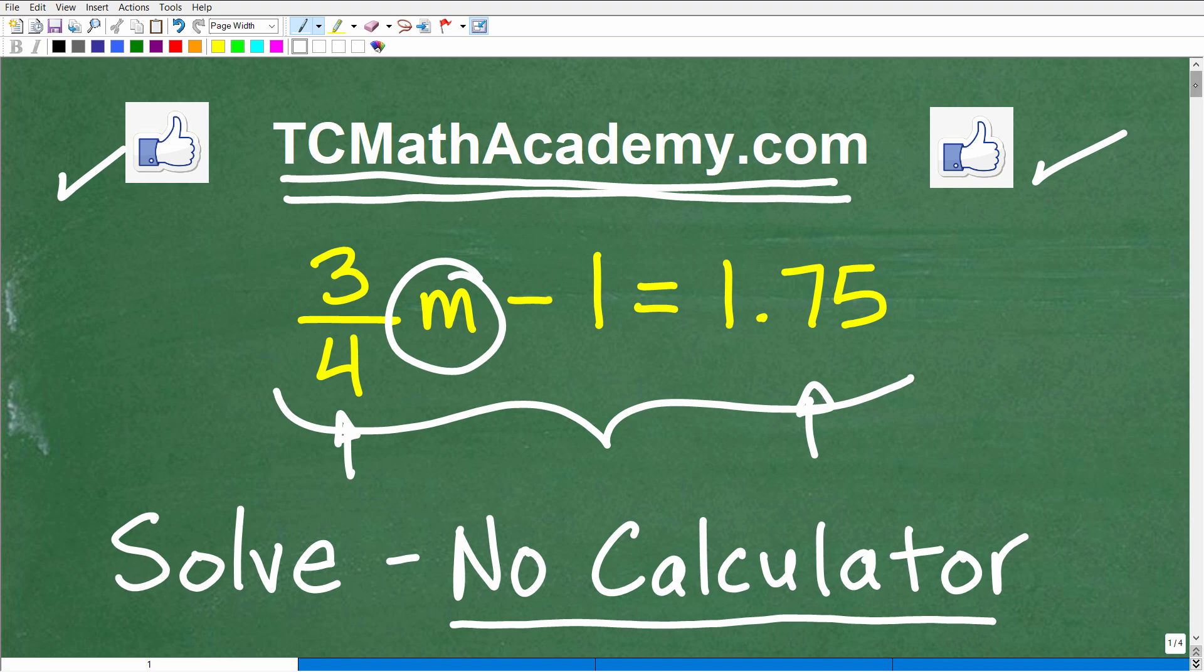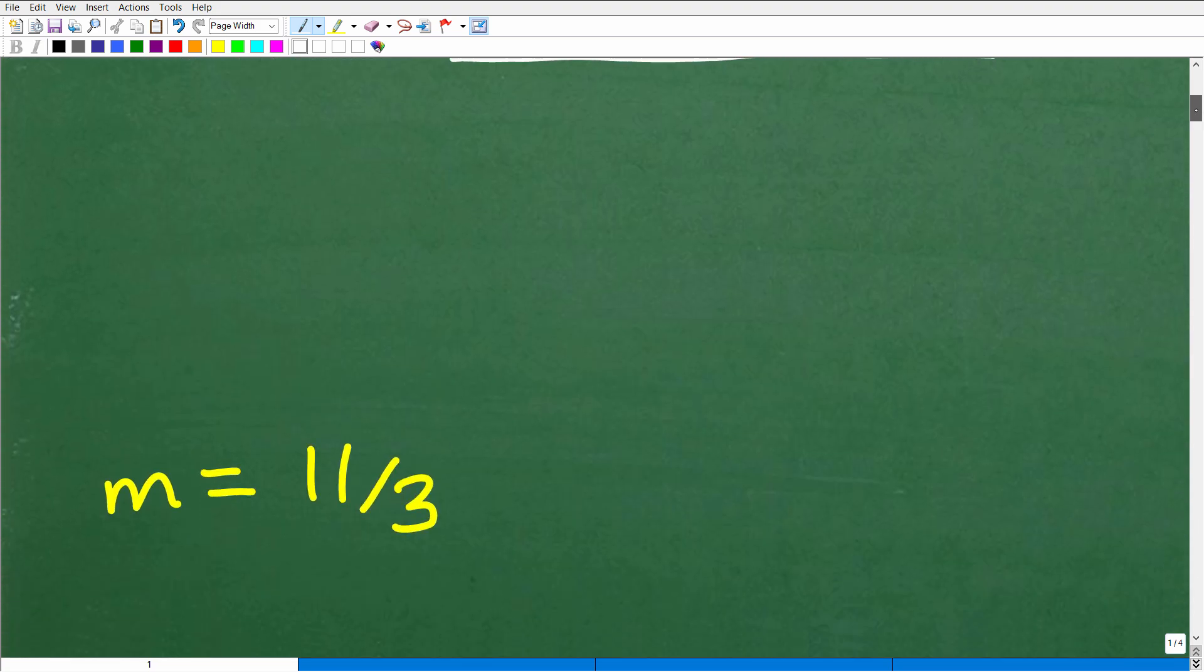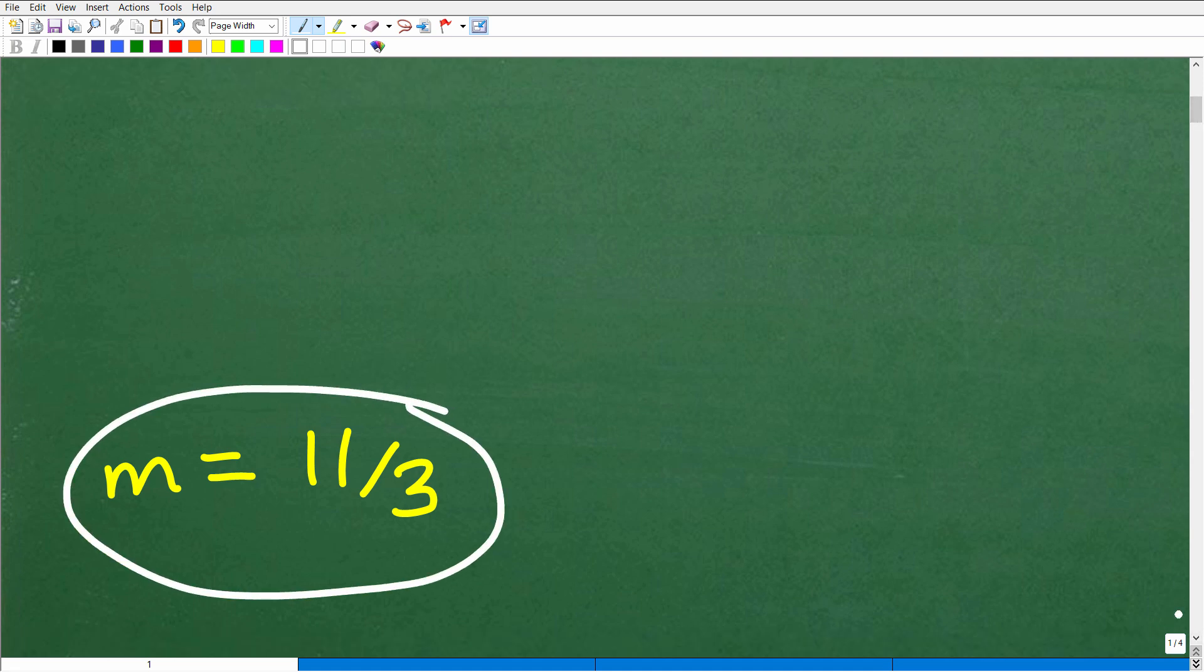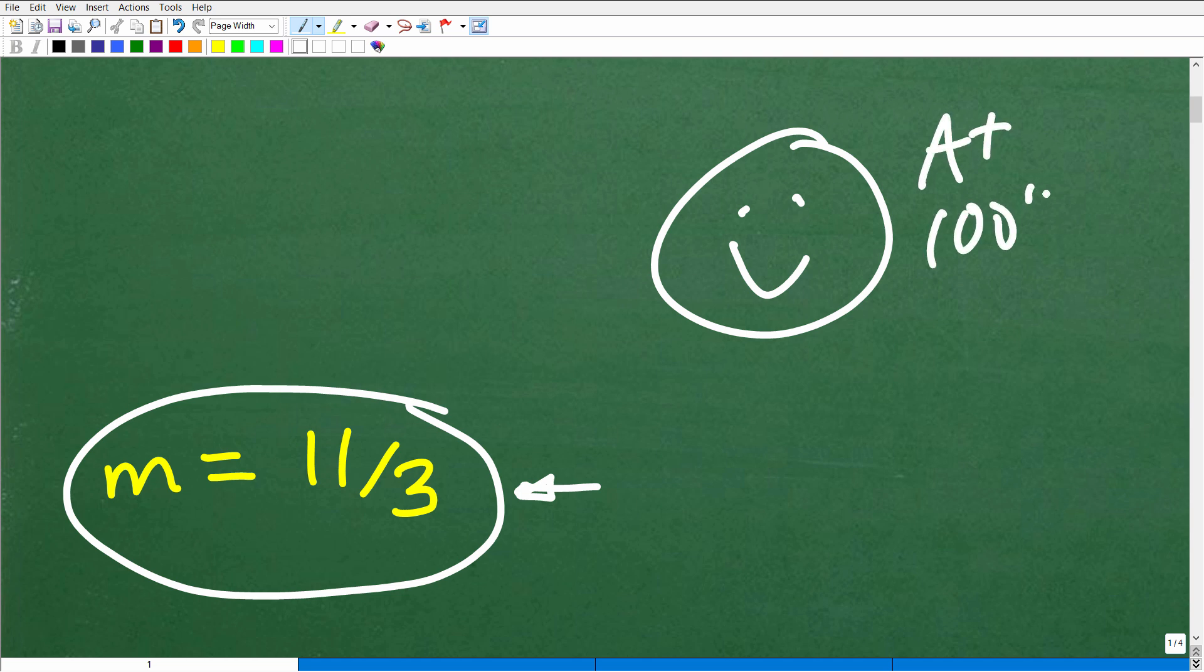What is M equal to? Well, M is equal to the fraction 11 thirds. So if you got something different than this, or if you change this to a mixed number, you'll know whether, in fact, you got an equivalent correct answer. But if you got this right, that is excellent. Matter of fact, let's give you a nice little happy face and a plus A+ 100% and a few stars. So you can celebrate your success with your family, that you know how to solve a basic linear equation without the aid of a calculator. They'll be very impressed with that information indeed.